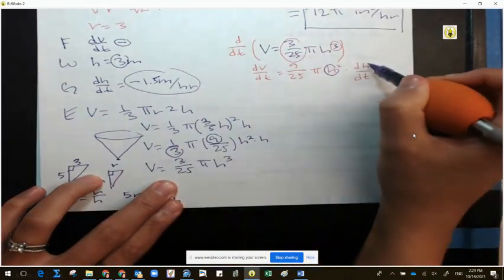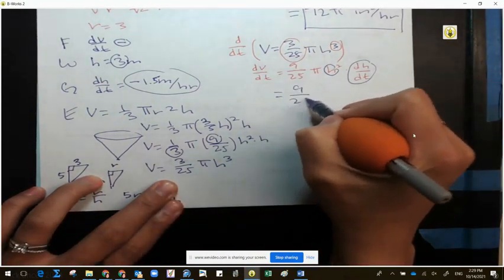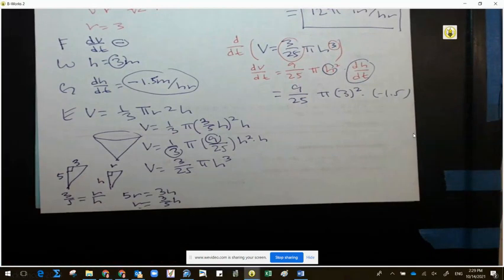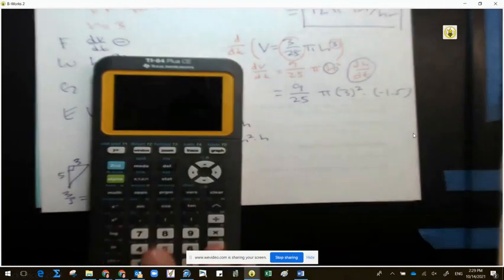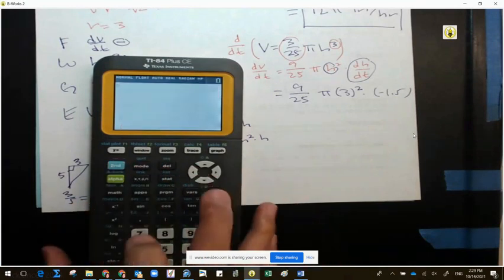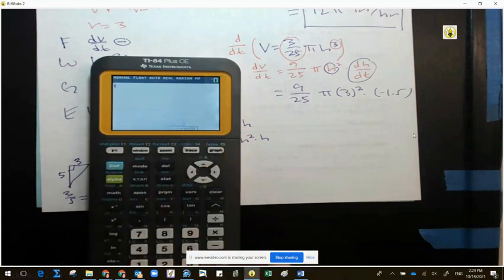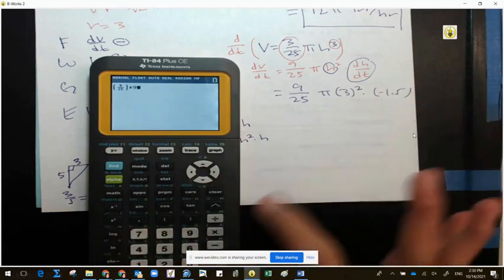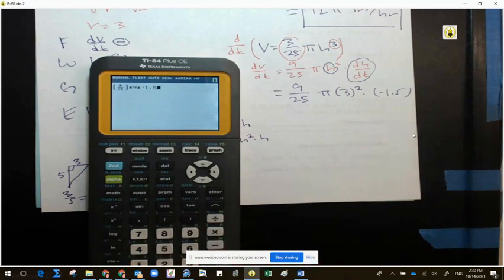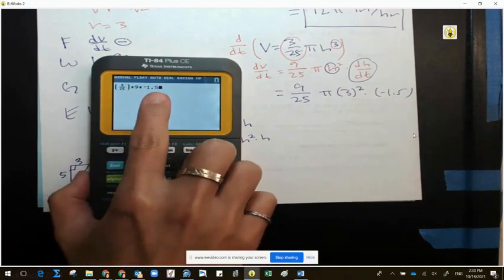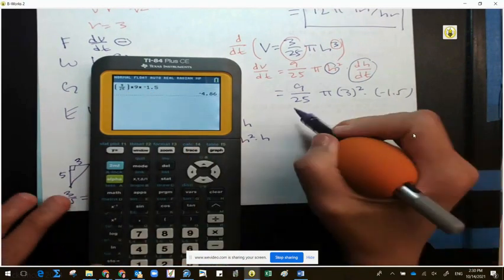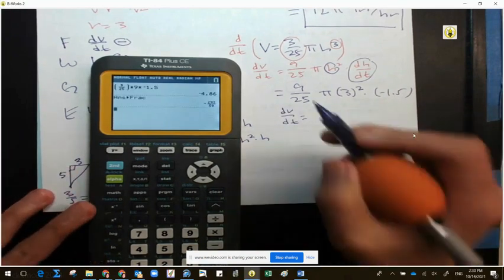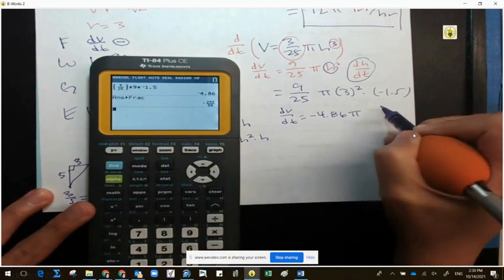I'm not doing that in my head. I got some ugly decimal. I'm going to go ahead and do this in terms of pi. So make sure I'm not typing in something crazy. 3 squared is 9, and then times negative 1.5. Did I mess up anywhere? 9 over 25, 9, negative 1.5. So you can write out dV over dt, and I'm going to go with negative 4.86 pi. And what was our units on this one?